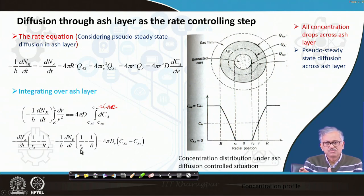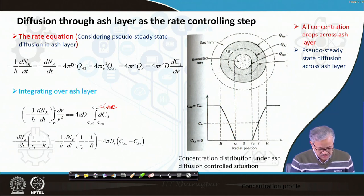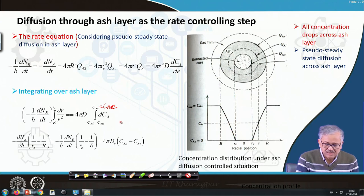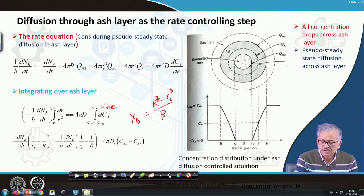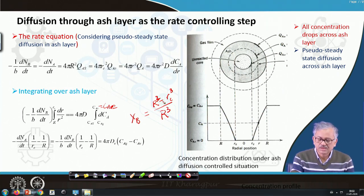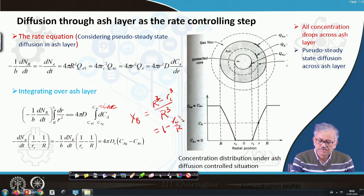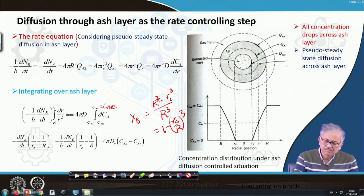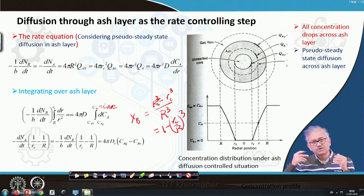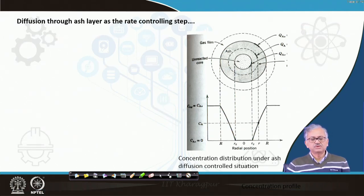Now integrating across time, we can correlate ρ_B with r_c. The number of moles N_B at any time t is (4/3)πr_c³ρ_B/M_B, so dN_B/dt = ρ_B·4πr_c²·(dr_c/dt). Substituting this into the rate expression and integrating gives the time–r_c correlation and the total time for complete reduction when r_c → 0: τ = ρ_B·r²/(6b·D·C_Ag). Notably, for ash layer diffusion control, τ is directly proportional to r², unlike chemically controlled or film-controlled processes where τ is proportional to r.